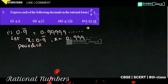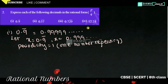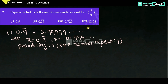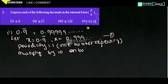Periodicity is equal to 1. Why? Because only one number is repeating. If two numbers are repeating, periodicity is 2. One number is repeating, so we need to multiply both sides by 10. So, 1 means 10. Let's take equation 1. Multiply by 10 on both sides. So, 10 into x will be equal to 10 into 0.9999...